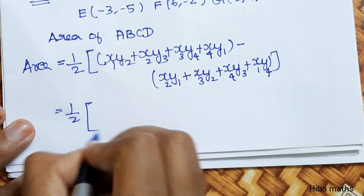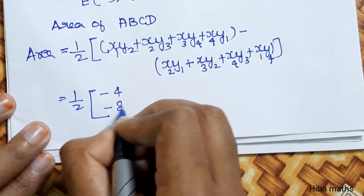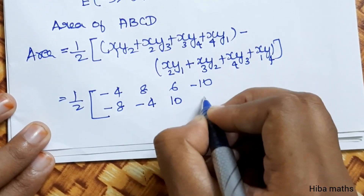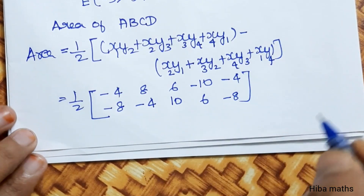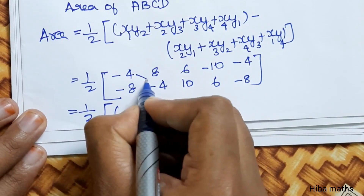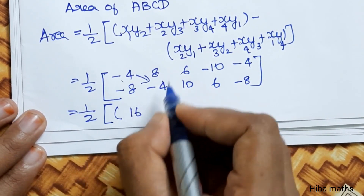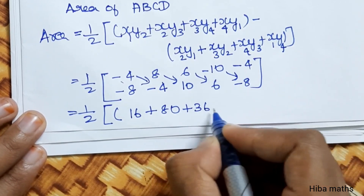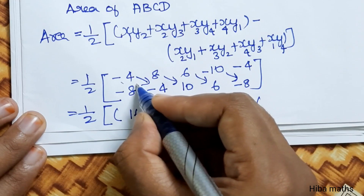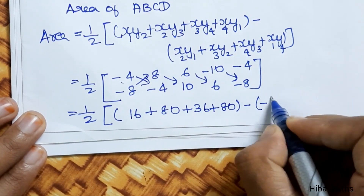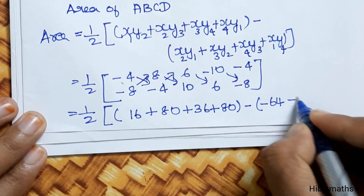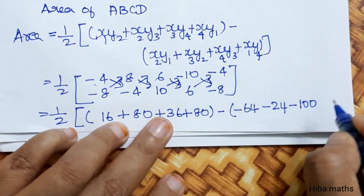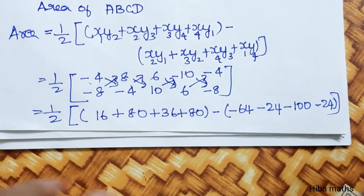Let's solve it. 1/2 into: first point minus four, minus eight; add eight, minus four; add six, ten; add minus ten, six. Then for the second bracket: minus four, minus eight; six, six — six times six is 36; ten's are 80; minus eight eights are sixty-four; minus six fours are twenty-four; minus ten tens are one hundred; minus twenty-four.